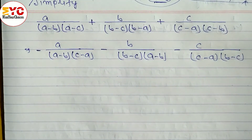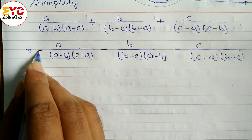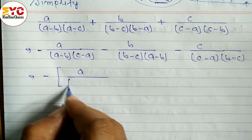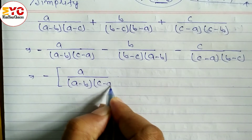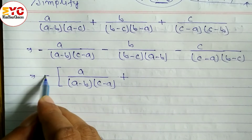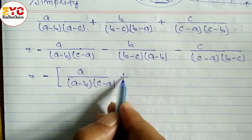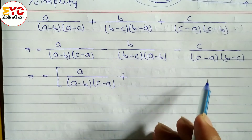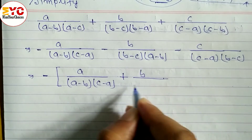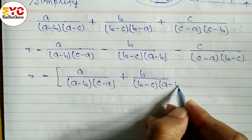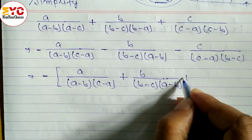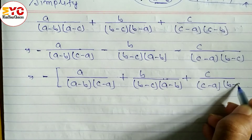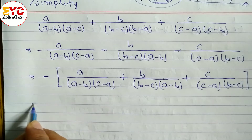Now all three terms have a minus sign, so we take minus common from all three. Taking minus common changes the sign of each term: minus becomes plus. We rewrite as minus times [a over (a minus b)(c minus a) plus b over (b minus c)(a minus b) plus c over (c minus a)(b minus c)].